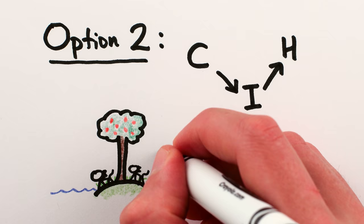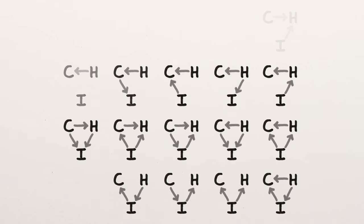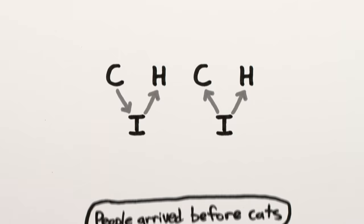So starting with 19 possible causal relationships, we used correlations to narrow things down to just two options. Not bad. And if we knew something about the timeline of when cats and people arrived at the islands, we might be able to narrow it down to just one option.